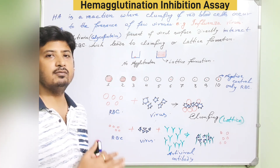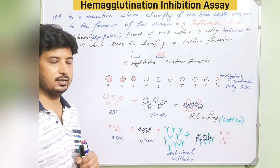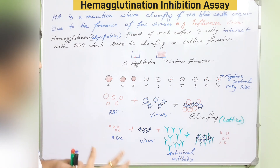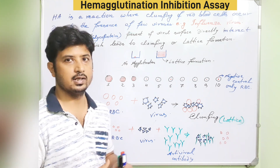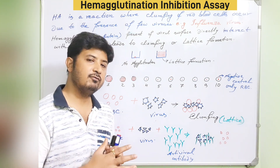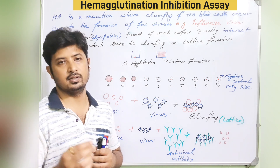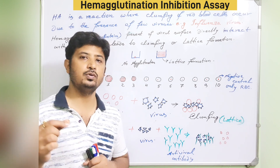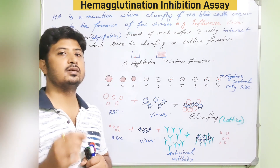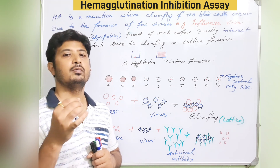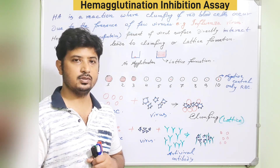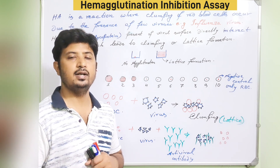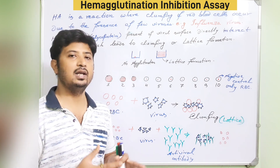To understand hemagglutination inhibition, we first need to understand hemagglutination. A hemagglutination reaction occurs when red blood cells interact with certain viruses via an antigen present on their envelope or outer surface called hemagglutinin. These surface proteins or glycoproteins directly interact with RBCs and form a clumping or lattice structure.